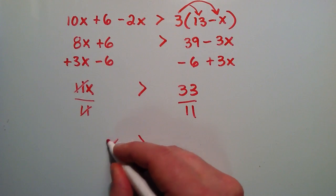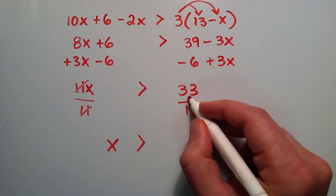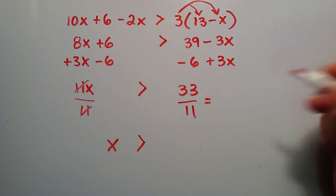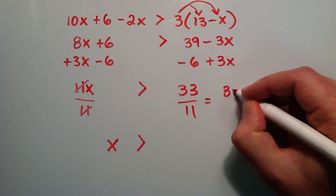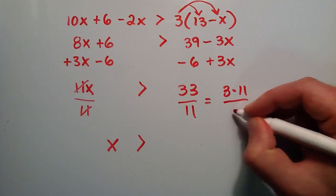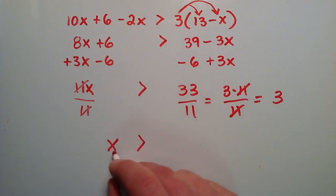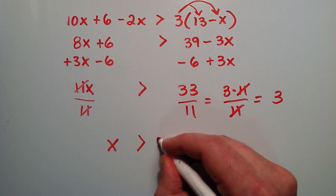11x divided by 11. The 11's cancel, giving us x on the left hand side. 33 divided by 11. Well 33 over 11 is really the same thing as 3 times 11 over 11. And then the 11 over 11 cancel, leaving us with 3. So basically the right hand side reduces to the value 3.